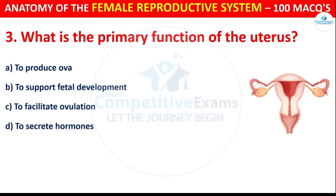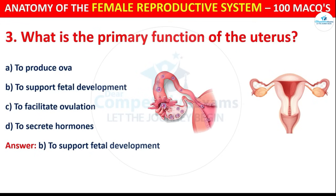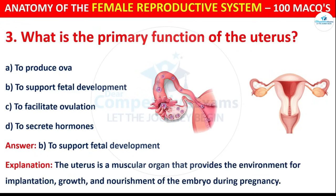The correct answer is To support fetal development. The uterus is a muscular organ that provides the environment for implantation, growth, and nourishment of the embryo during pregnancy.